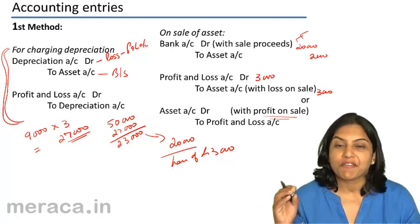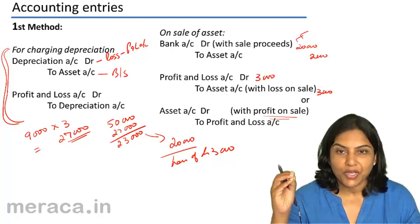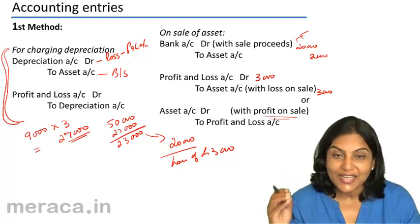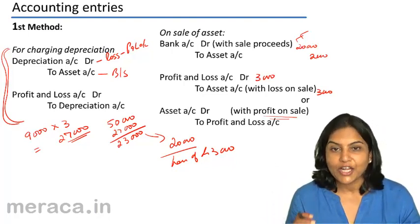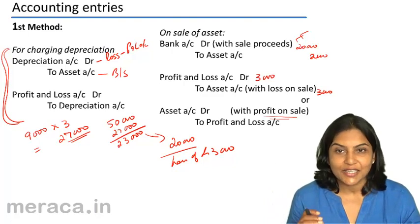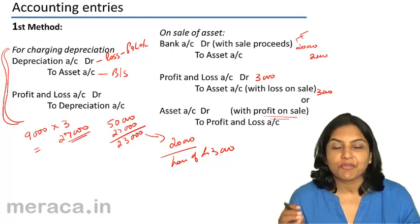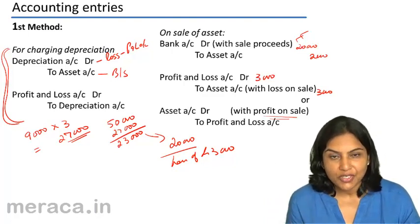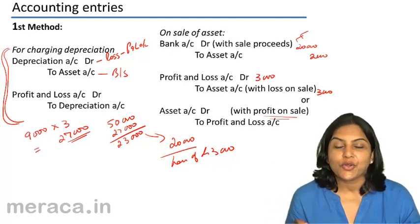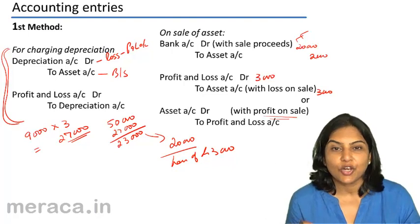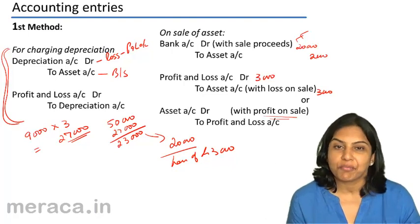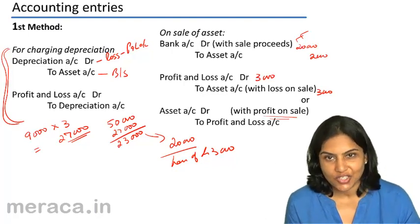If the value at which we are able to sell is higher than the book value of the asset, then we have made a profit. If the value at which we are able to sell is lower, then we have made a loss.